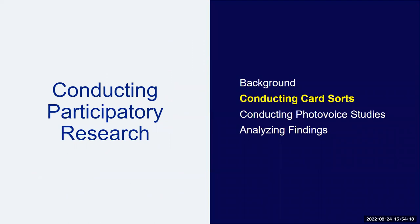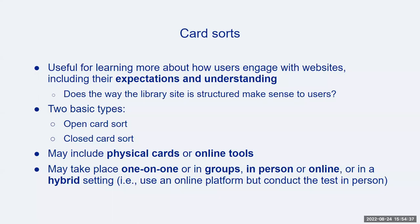So let's now start by talking about conducting card sorts. Card sorts are most useful after you have a general understanding of your users and their behaviors on your website. Card sorting activities are typically used to learn more about how well a website's information architecture, or IA, works, or to redesign the information architecture. In short, IA is the organization, search, and navigation systems that help people to complete tasks, find what they need, and understand what they found.